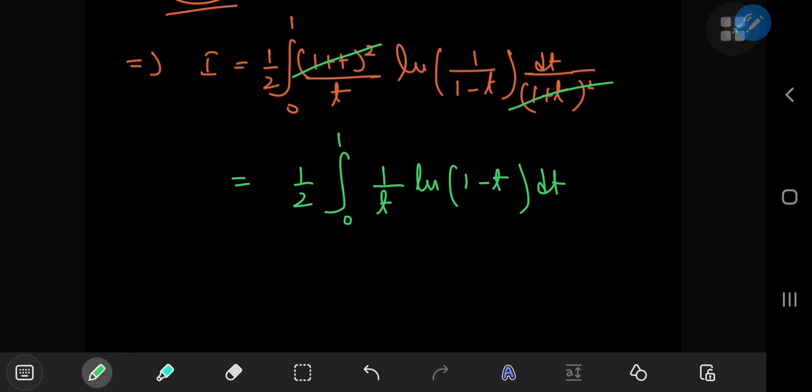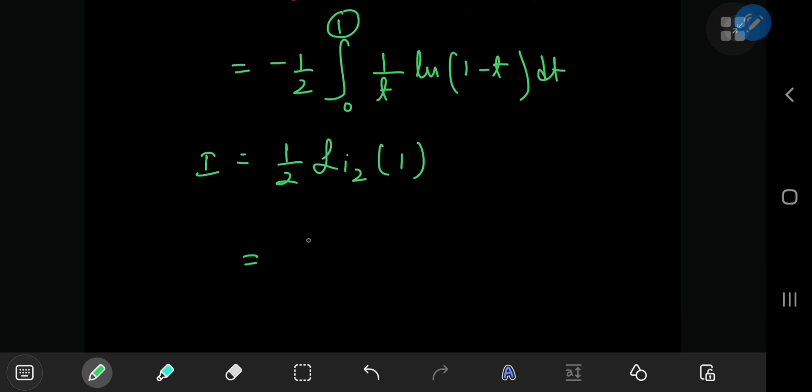you'll get a negative sign out here. So the negative sign and the integral are both the dilogarithm of x, and x in this case is 1, and the dilogarithm of 1 can be evaluated quite easily using the series expansion.